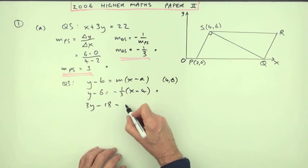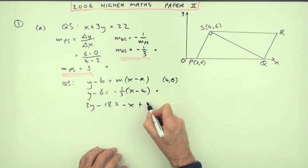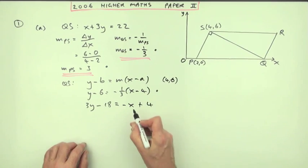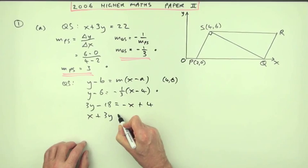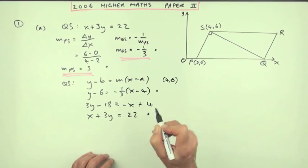So I've got 3y minus 18. And this side is left with negative 1 times that equals negative x, but that will be plus 4. Now I can jump straight over to taking that across x and the 3y. And I don't need to show 4 plus 18. I can just go straight in with 22 for the fourth mark.